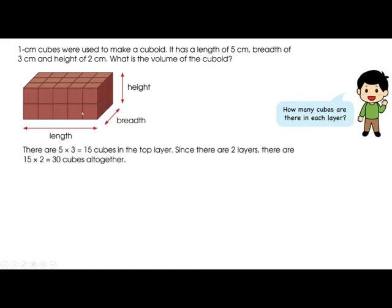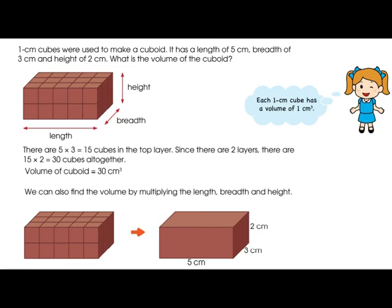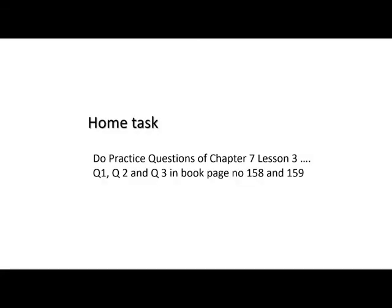There are five times three, which equals 15 cubes on the top layer. Since there are two layers, that is 15 multiplied by 2, equal to 30 cubes altogether. The volume of this cuboid is 30 cm³. We can also find the volume by multiplying length times breadth times height: 5 × 3 × 2 = 30. So the volume of the cuboid equals length × breadth × height, which is 5 × 3 × 2 = 30 cm³.